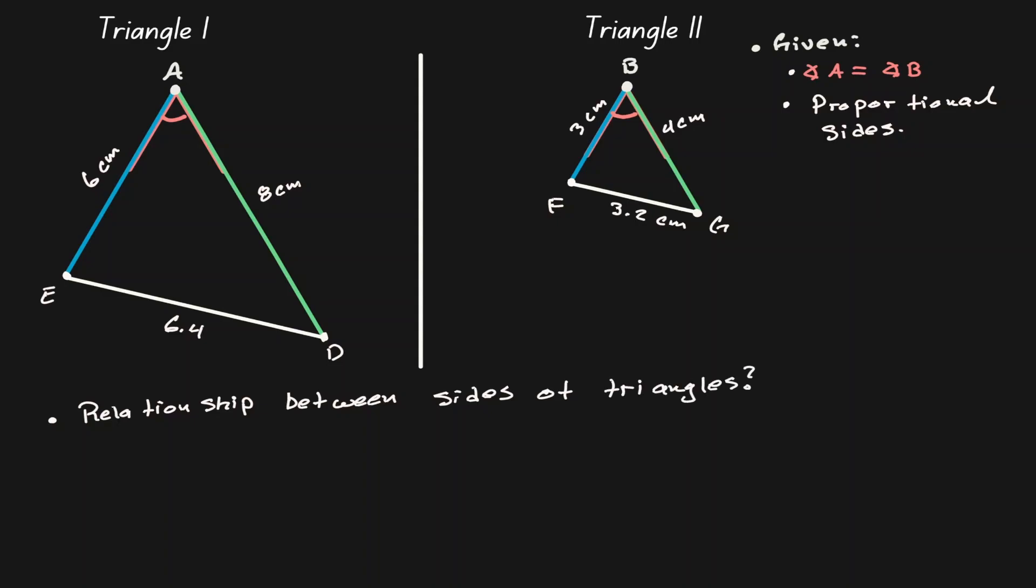Let's look at the proportion of the blue sides, EA over FB, and then let's compare it to the proportion of the green sides, AD over BG. And then let's look at the proportion of the white sides, ED over FG.